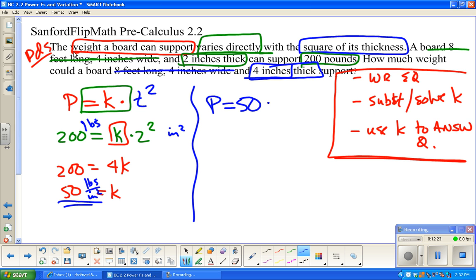How much weight could a board 8 feet long, again, 8 feet long, 4 inches wide. I'm not using that right now. So, p equals k. Well, now I know a number for that. Times thickness squared. Well, this is 4 squared. So, worth noting that I'm still following the same exact relationship here. This is still k times t squared. So, this is 50 times 16.